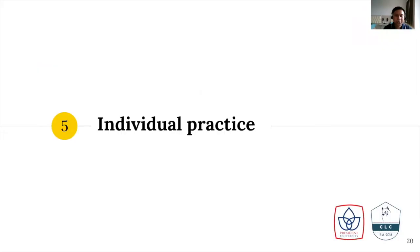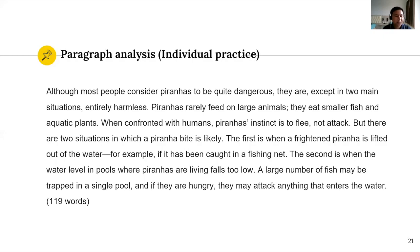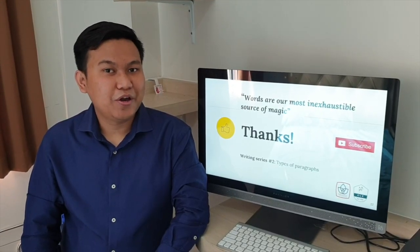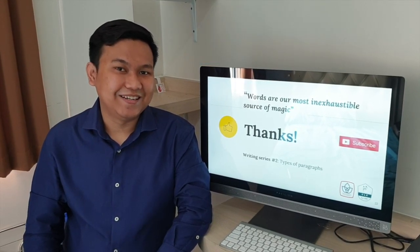Next we will have individual practice. You may pause the video and analyze the paragraph by yourself, and then you can share your answers or responses in the comments section if you want. I have a paragraph here — it's around 119 words. What I want you to do is analyze which one is the topic sentence, the supporting sentences, and whether there is any concluding sentence or not. Remember, the concluding sentence is optional — it's not compulsory for every paragraph. Thanks for watching. If you enjoy our video, please click like, share, and subscribe. I'll see you again in the next writing series videos.